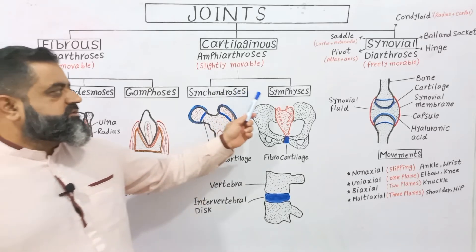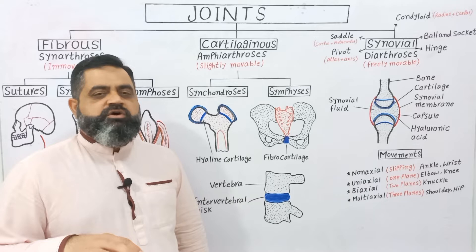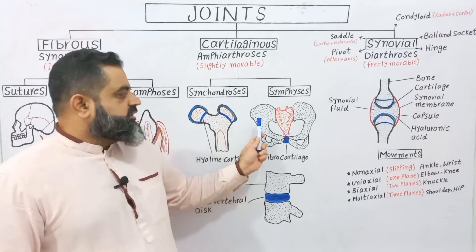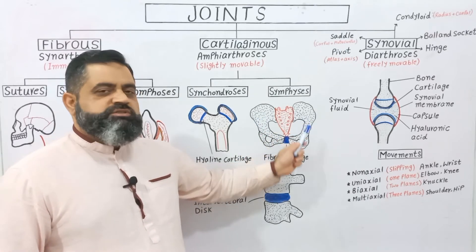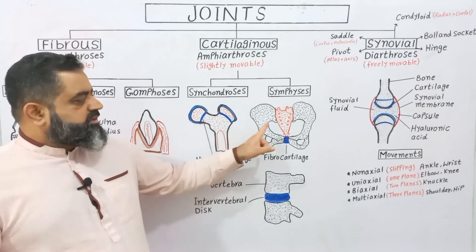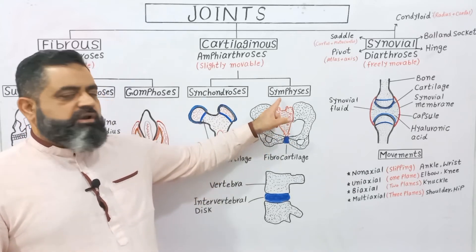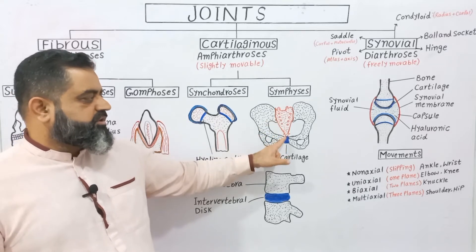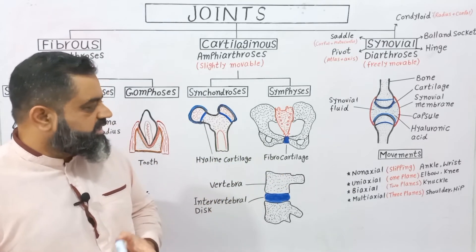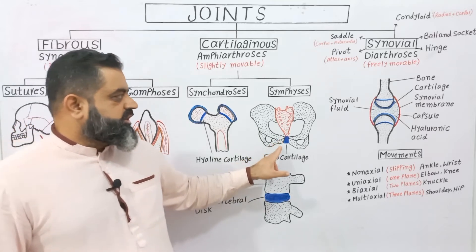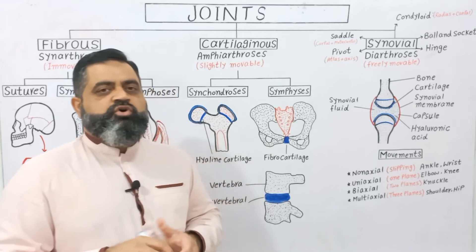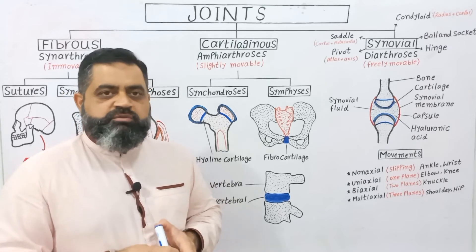The second type of cartilaginous joints are symphysis, present in the pelvic region. There are two coxal bones in our pelvic region, each made up of three bones: ileum, ischium, and pubis. Between these two bones, just beneath the vertebral column, there is a joint made up of fibrocartilage which is slightly elastic. This symphysis joint provides flexibility to our pelvic bones during childbirth and during walking, running, or any kind of body movement.